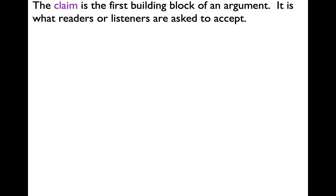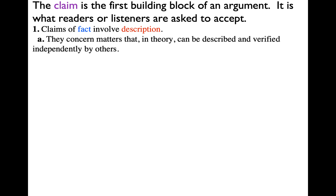Now, as far as the parts of an argument, the claim is the most important part. It's the first building block — it's what we want a reader or a listener to accept. There are four kinds of claims that we normally talk about. The first is a claim of fact. It involves some kind of description — matters that, in theory, can be described or verified independently by others.